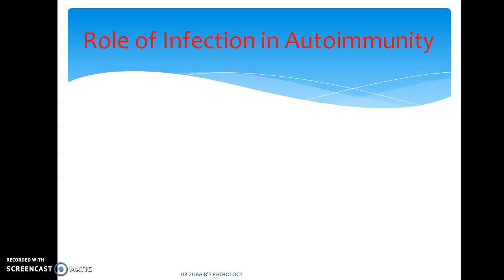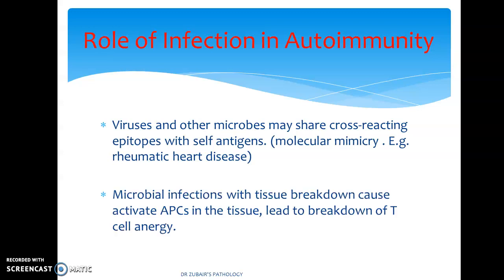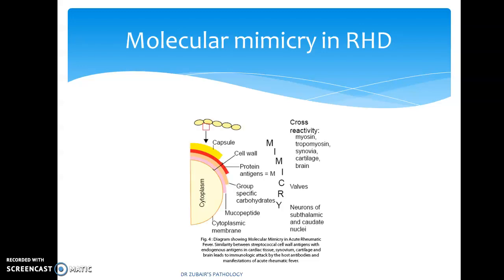What is the role of infection in autoimmunity? Viruses and other microbes may share cross-reacting epitopes with self-antigens — this is called molecular mimicry. An example is rheumatic heart disease. Microbial infections with tissue breakdown cause activation of antigen-presenting cells, leading to breakdown of T-cell anergy. There is infection-triggered autoimmunity generating immune responses against pathogen components, causing cross-reactivity against self-antigens. In rheumatic heart disease, similarity between streptococcal cell wall antigen and endogenous antigens in cardiac tissue, cartilage, and brain leads to immunological attack by host antibodies, manifesting as acute rheumatic fever.